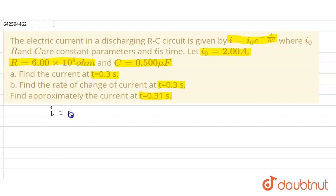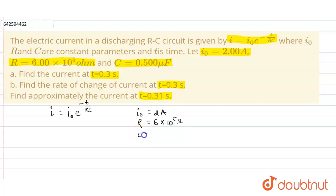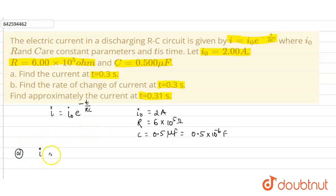The relation to find the current is I = I₀ e^(−T/RC). The value of I₀ is 2 ampere, R is 6×10⁵ ohms, and C is 0.5 microfarad, which we can also write as 0.5×10⁻⁶ farad.